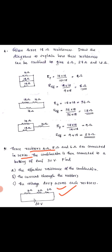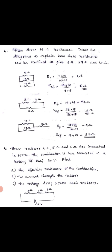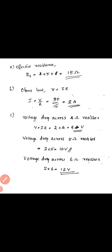Since the three resistors are connected in series, we simply add them. The effective resistance Rs = 4 plus 5 plus 6 = 15 ohm.